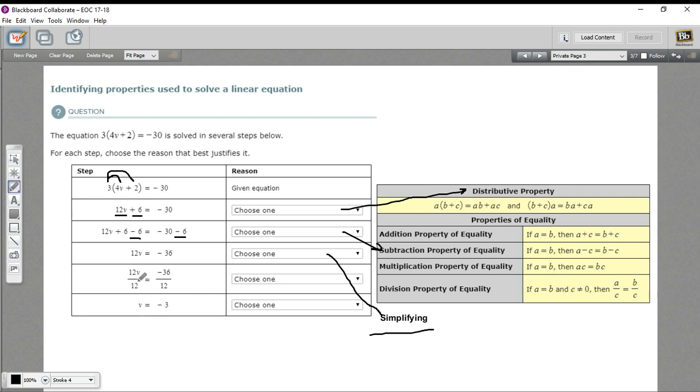Here in the next step, they're dividing both sides by 12, and you know that you need to do that to get V alone. You've got to undo the multiplication by dividing by 12, dividing by whatever is multiplied by V. So that is going to be your division property of equality.